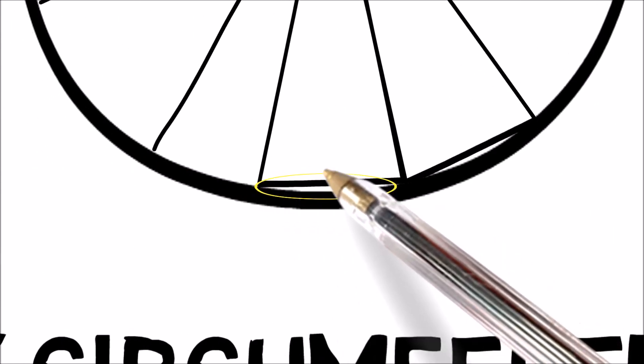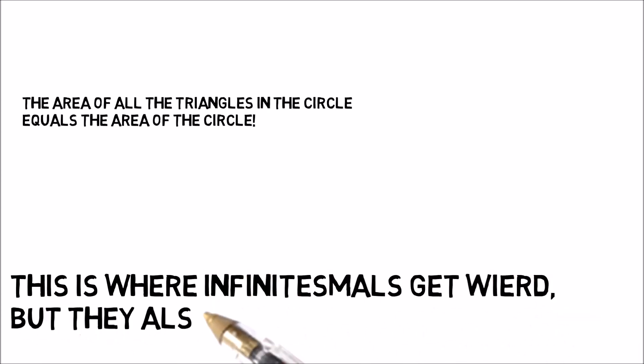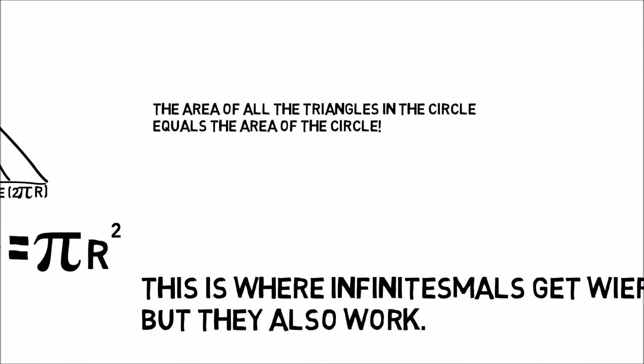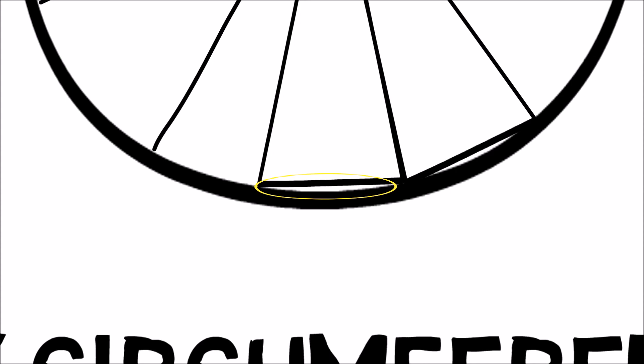Remember the blank spaces under the triangle? What happened to those? This is where infinitesimals get weird, but they also work. Despite there being extra space in the circle, the areas of the triangle within still equal the area of the whole circle, including the space below the triangles that was not in the triangles.